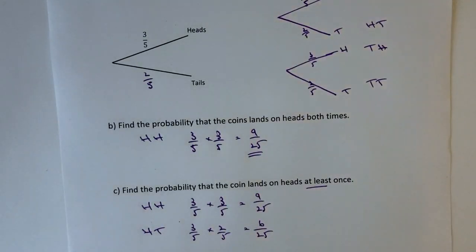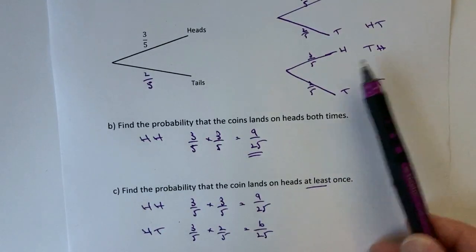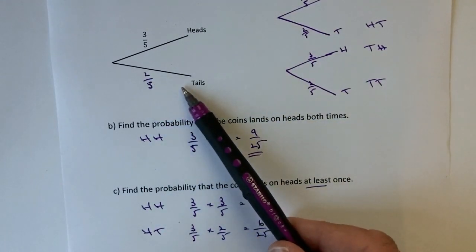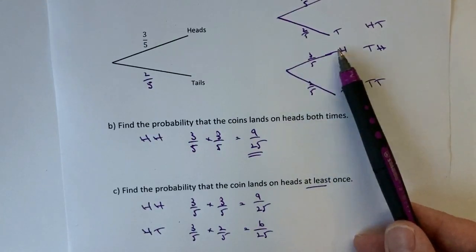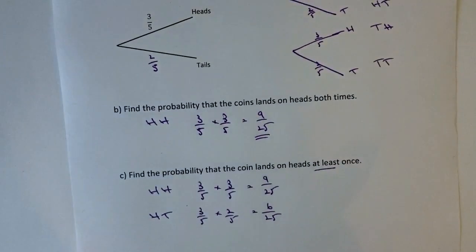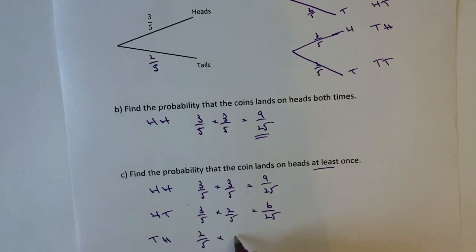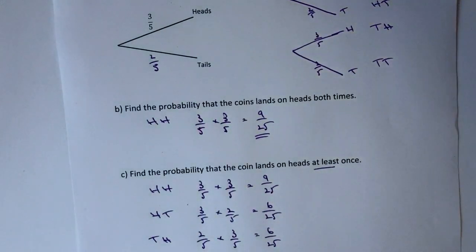All right, the final one that I'm interested in is going to be tails heads which is this one here. So I've got tails is going to be two fifths and heads is going to be three fifths. Okay, so tails heads is going to be two fifths multiplied by three fifths. Okay, and again, that's going to give me six twenty-fifths. Okay, hopefully you can see that.